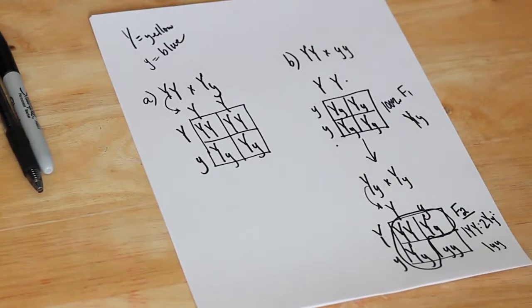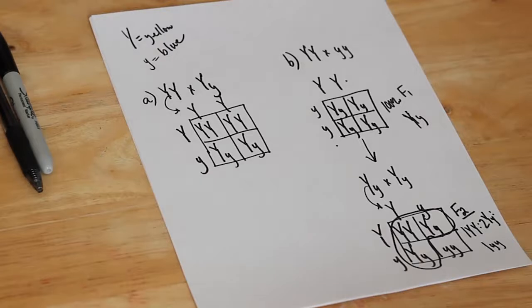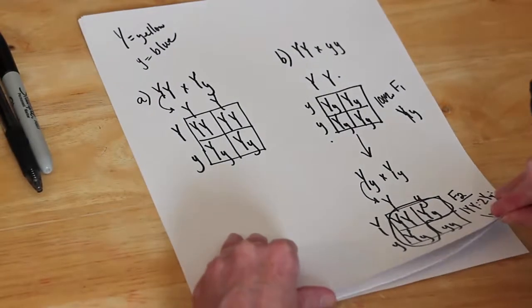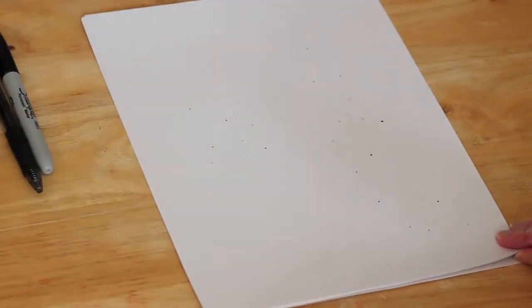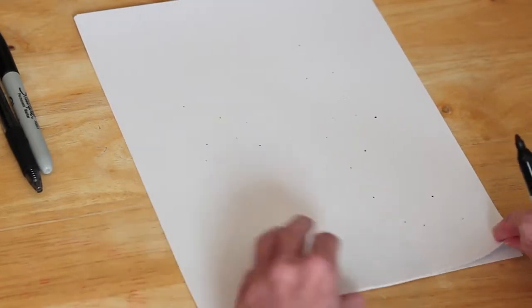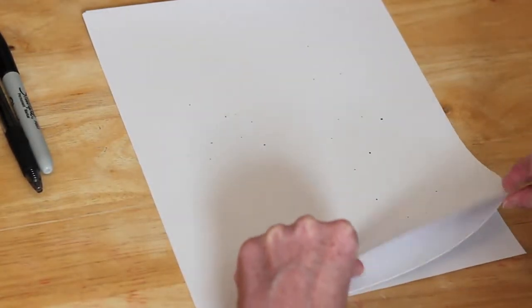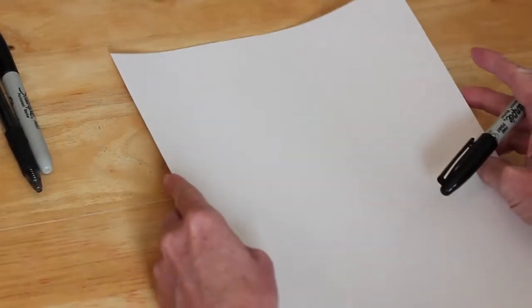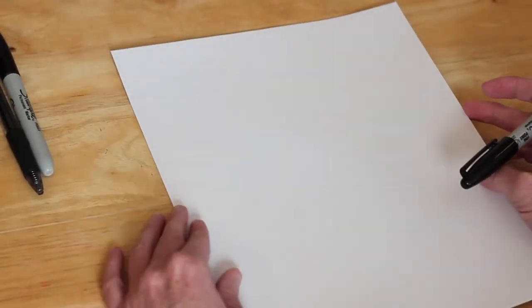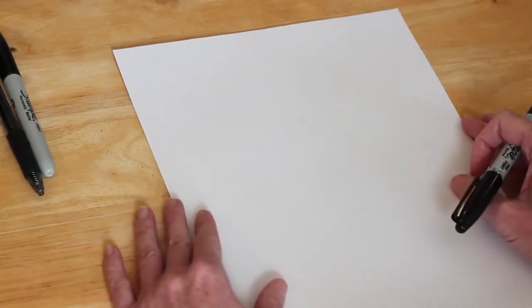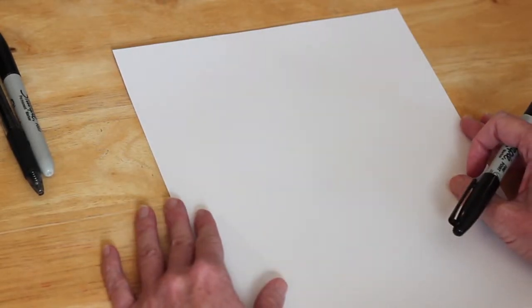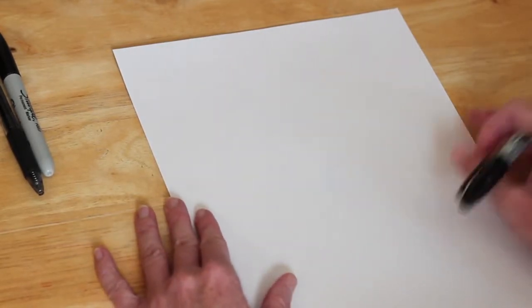Moving along, there is another problem where you have to identify the possible gametes for certain individuals. This would be for a dihybrid cross — something with two traits. Let's make sure we can do that.